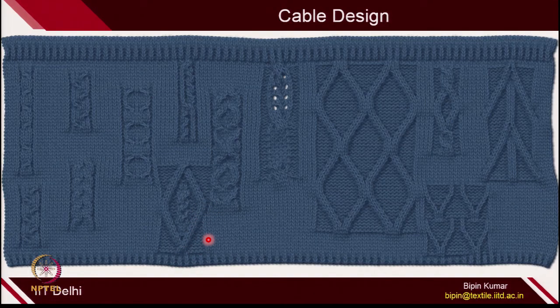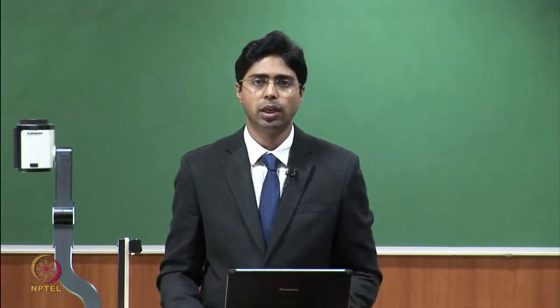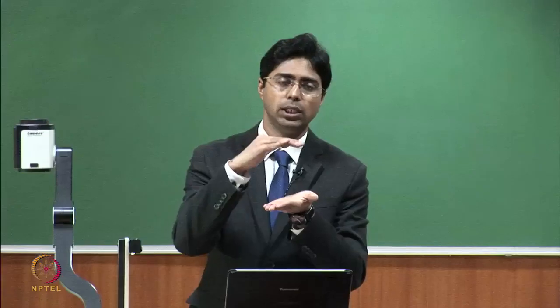In cable design, many possibilities exist and very beautiful effects on the surface can be created — it entirely depends on the imagination of the designer. The concept remains the same: you can play and exchange the columns to create beautiful architectures on the surface. Whenever you are transferring, one loop is on top of the other loop, and because of that some projection will come. Whenever loops are overlapping, the surface will raise, giving you a certain pattern. Cable is the most popular choice for designers in creating different types of designs on fabric surfaces.